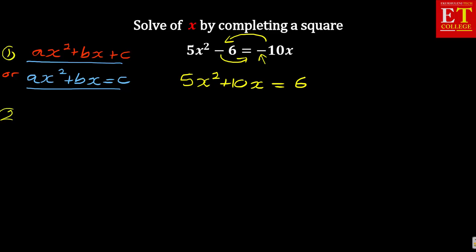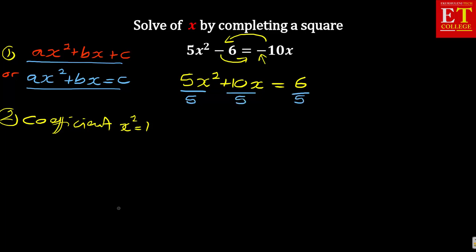Step number two: the coefficient of x squared must be equal to 1. The coefficient of x squared here is 5, so you divide everything by 5 — each and every term. The advantage of having an equal sign is you can divide both sides. When you cancel out, you get x squared plus 2x is equal to 6 over 5.